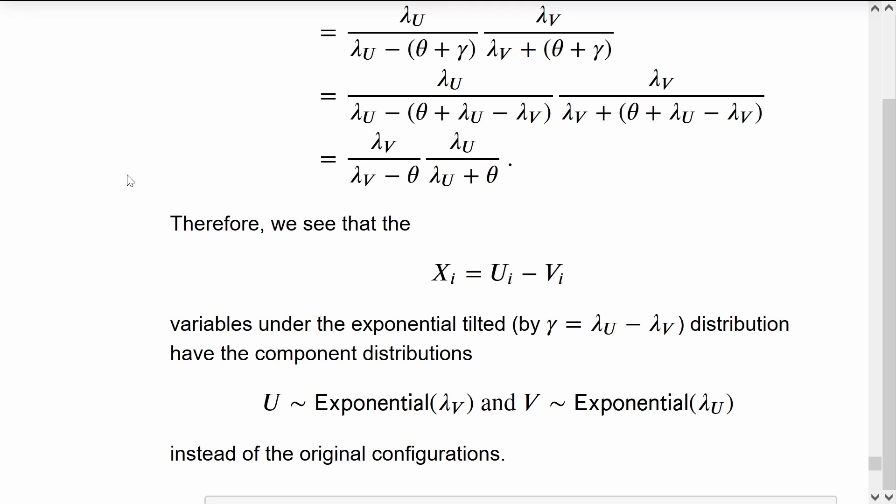To simulate for X underneath the measure G, we will simulate X as a difference of exponentials, but the U will now be distributed according to an exponential with parameter lambda_V, and the V will take the parameter lambda_U.